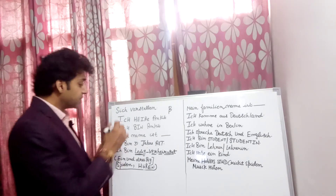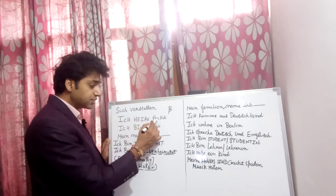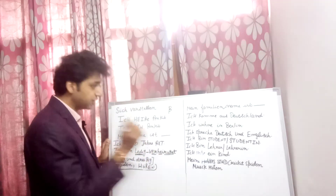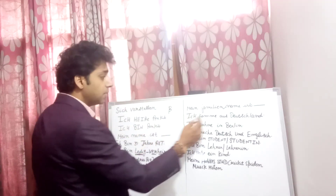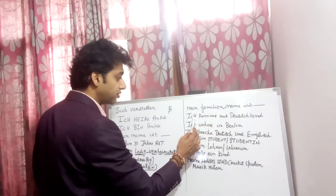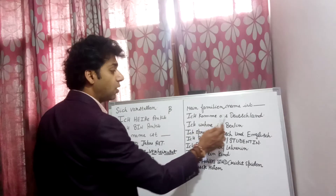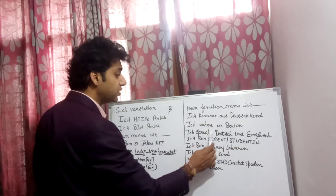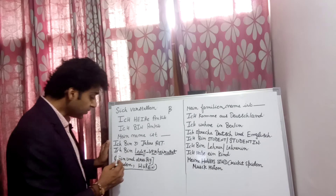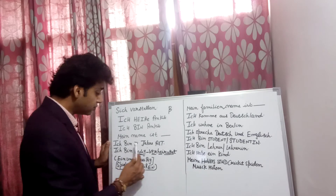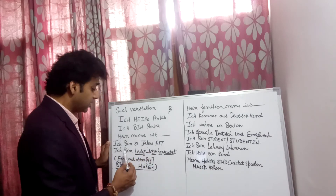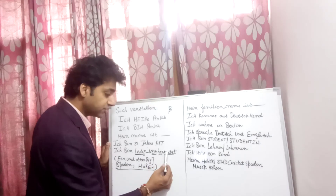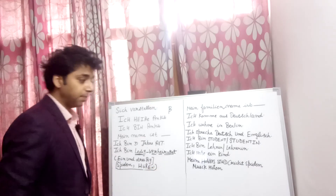Let's repeat one more time the full introduction: 'Ich heiße Ankit. Ich bin Ankit. Mein Name ist Ankit. Mein Familienname ist Malhotra. Ich komme aus Deutschland. Ich wohne in Berlin. Ich spreche Deutsch und Englisch. Ich bin ein und dreißig Jahre alt. Ich bin ledig. Ich bin verheiratet' — that means 'I am married.'